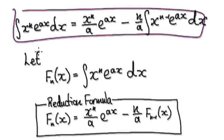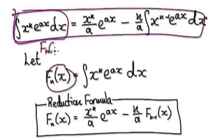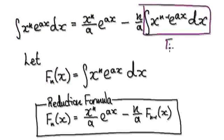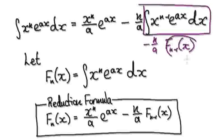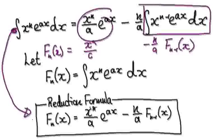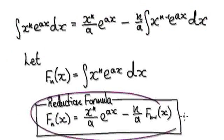So when you look at this, if you set this to be F(N), then this bit here will be one notch down — the previous term — which will be F(N-1). So this here will be your previous term. It's saying N over A minus N over A times F(N-1). So F(N) of x equals x^N times e^(Ax) over A, minus N over A times F(N-1). That will then give you your reduction formula.